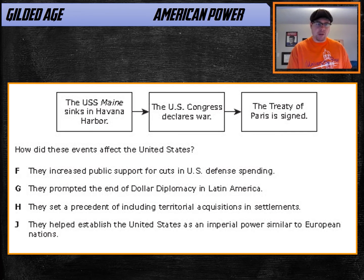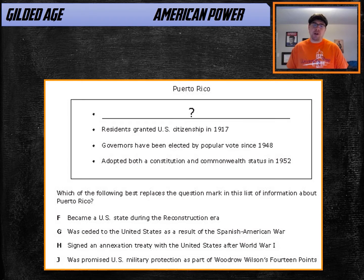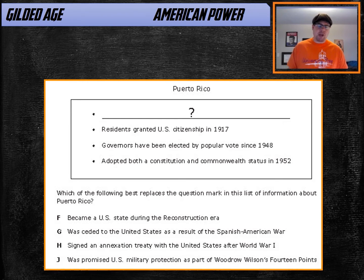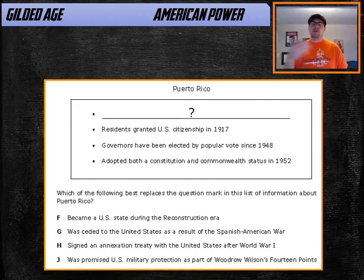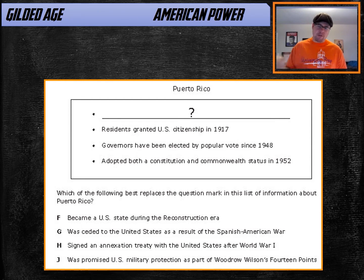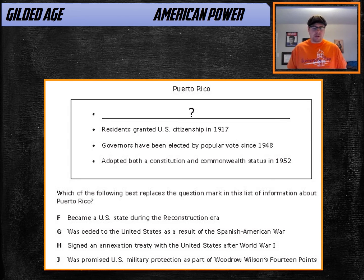Here's one I like because they get a little sneaky. It's titled 'Puerto Rico' and looks like it's going into Puerto Rico's history. The first item is blank, then they grant US citizenship in 1917, in 1948 they elect governors by popular vote, and then they become a commonwealth in 1952. None of that matters — what it's looking for is that first blank, something happening before 1917. The answer is G: 'ceded to the United States as a result of the Spanish-American War.'